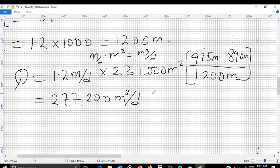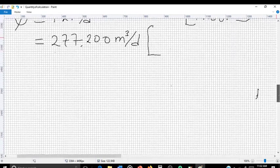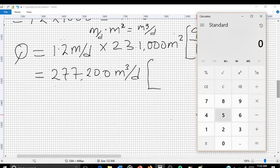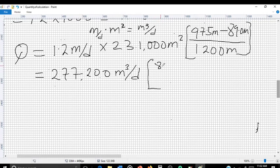Let's subtract 89.0 from 97.5. So, 97.5 meters minus 89.0 meters equals 8.5. So we have 8.5 meters over 1,200 meters.